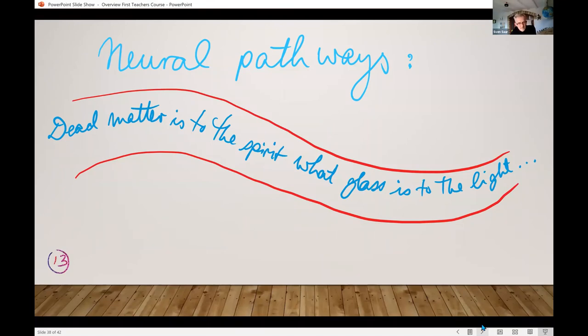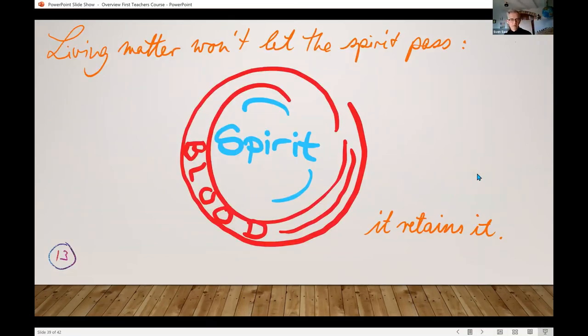Then there's this rather poetic sentence that dead matter is to the spirit what glass is to the light. In other words, the nervous system lets the spirit through, which is why we can think, why we're so alive to other people's thoughts and the thoughts that move the world around us. Whereas the blood traps the spirit. It won't let the spirit through, it retains it instead, which is why we don't know with consciousness what happens in our blood system, but which is why, in the words of Mephisto in Goethe's Faust, blood is a special substance. When we make a pact with the devil, we sign it with blood, not with ink, because that's where we know intuitively the spirit to reside.